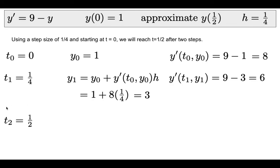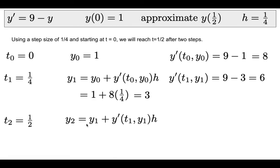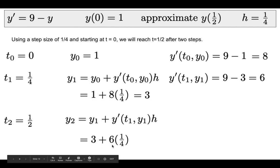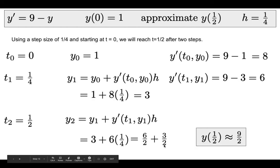To get our next t value: t₂ = 1/4 + 1/4 = 1/2. For the final y value, we use y₁ = 3, slope = 6, and step size = 1/4: y₂ = 3 + 6 × (1/4) = 3 + 3/2. Giving everything a common denominator, 3 = 6/2, so y₂ = 6/2 + 3/2 = 9/2. Therefore, y(1/2) ≈ 9/2.